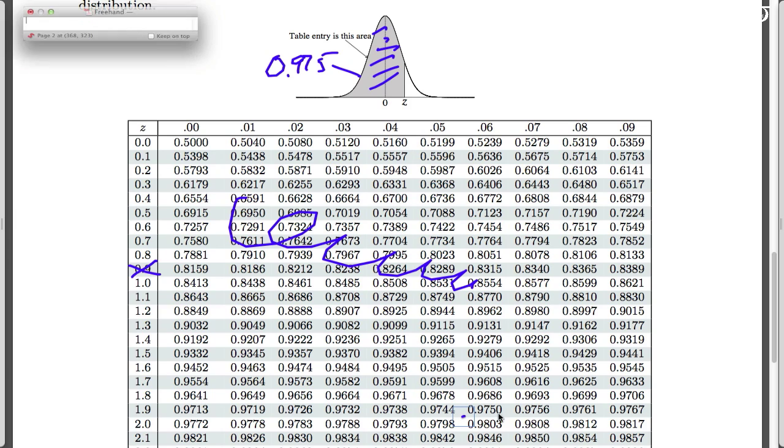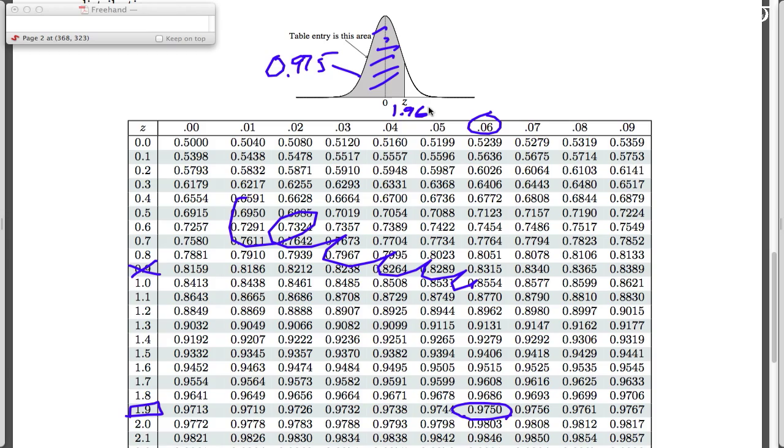So we're going to walk in here. Lo and behold, look what we have here. 0.975. That's pretty darn close to what we're looking for, the 0.975. So we walk over here and our z value corresponding to that is 1.96. So the z value that makes that happen is 1.96. And that is our appropriate value.